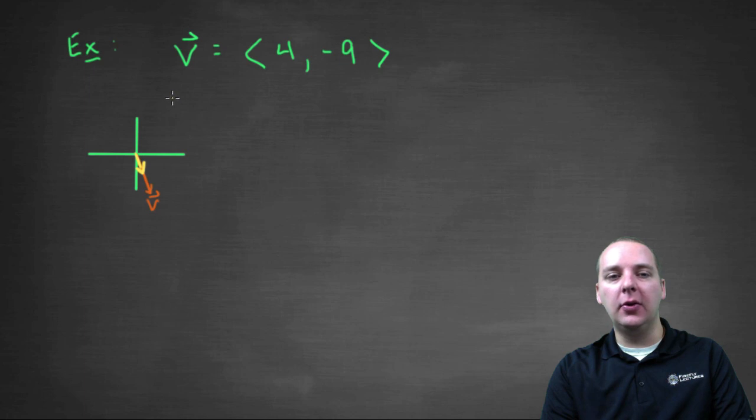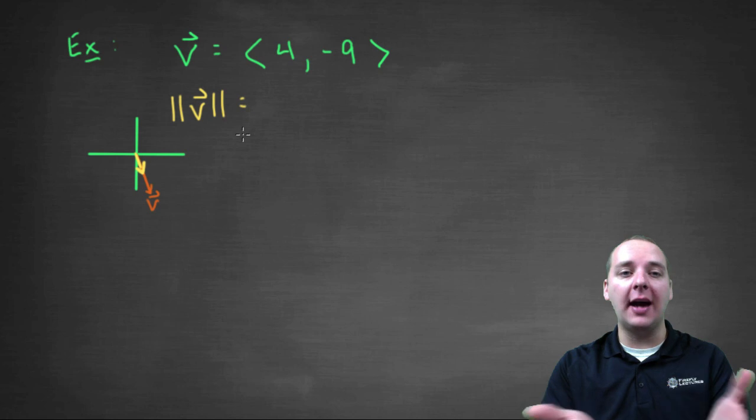Well we're going to use that formula. The first thing we actually need though, is the magnitude of V, because that's part of the formula. We need to know how long V actually is.